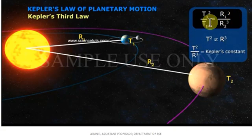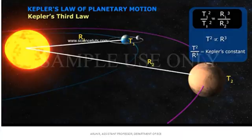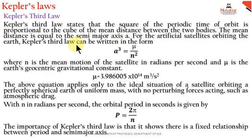From this equation we can write t² is proportional to r³. So we can write t² / r³ equal to a Kepler's constant. In this Kepler's third law, we can write a³ equal to a constant μ / n², where μ is calculated in satellite communication.